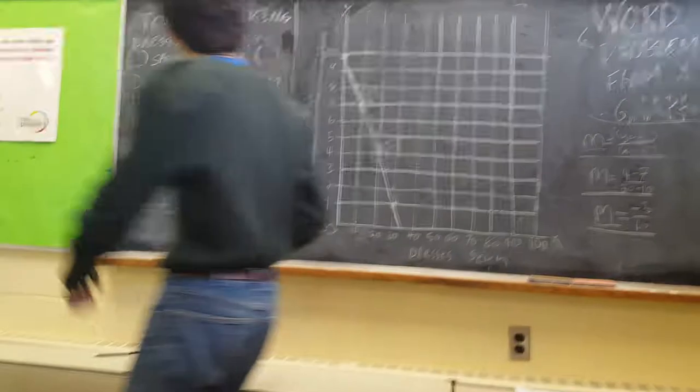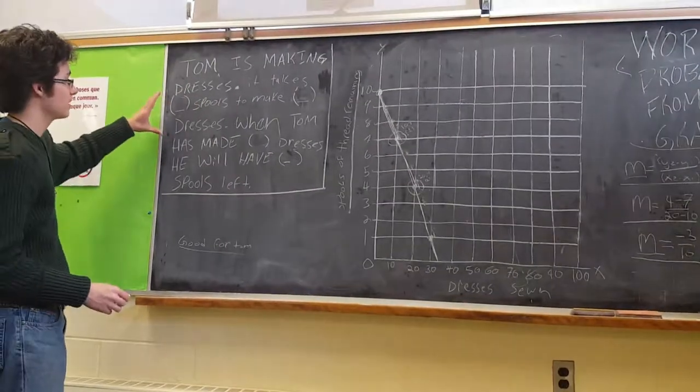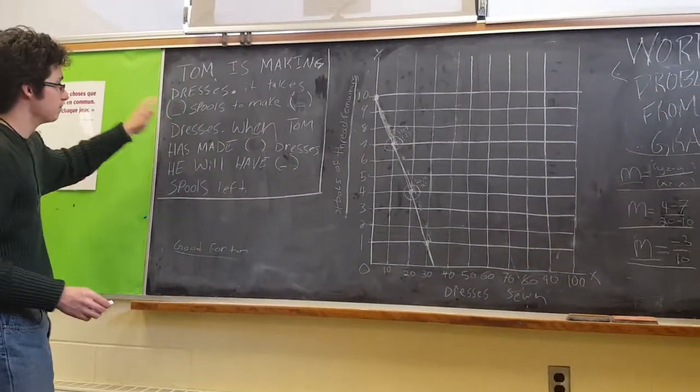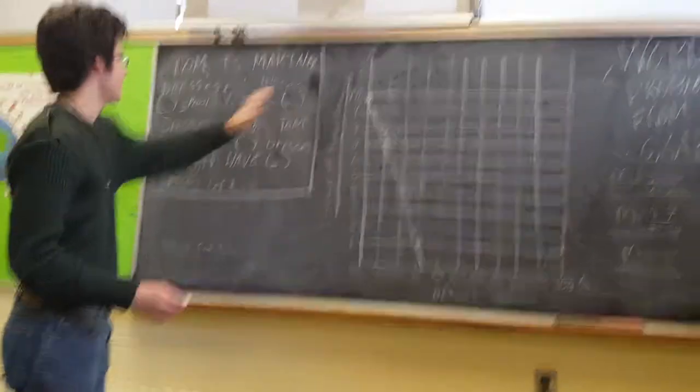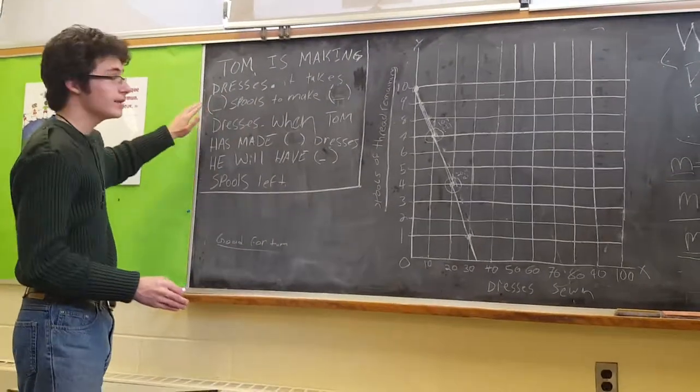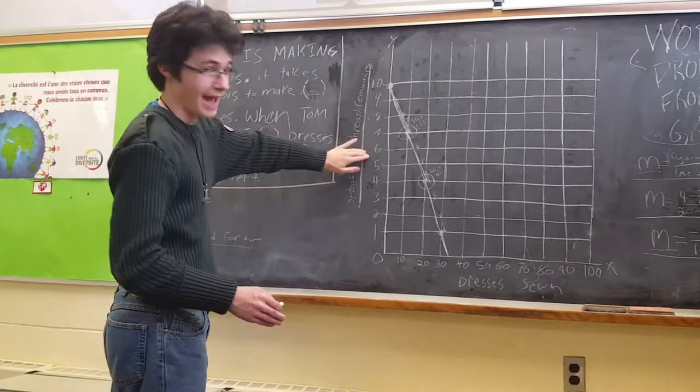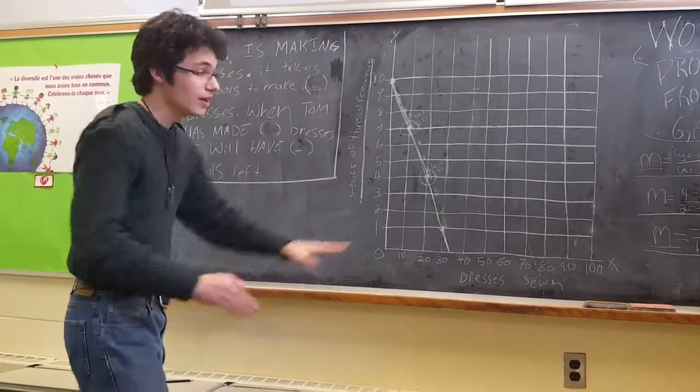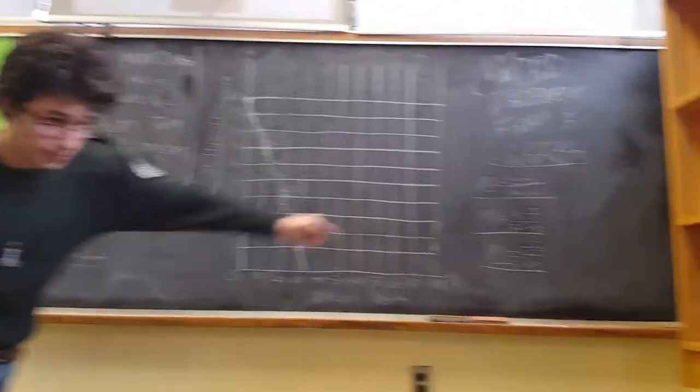So you go over here. The next part is describing the slope. It takes blank amount of spools to make blank dresses. So we know that spools is the y-axis. So obviously, the change in y, which is negative 3 over there, will go in the spools.